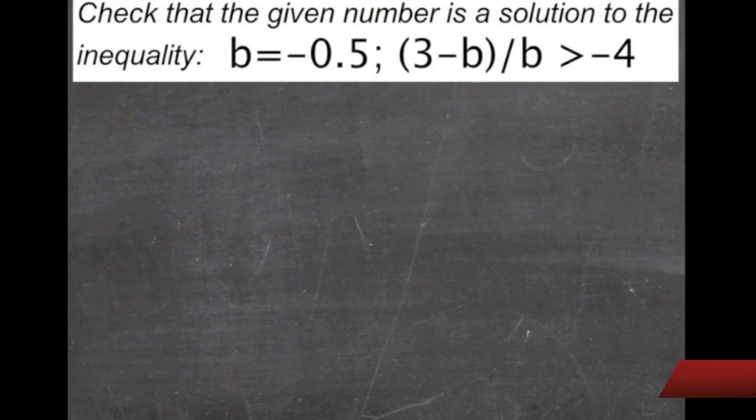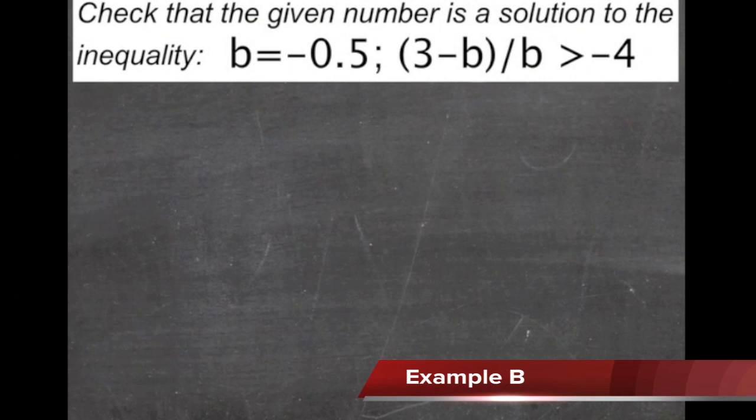Here's another example of checking the answer under the inequality. The information we're given tells us that b is equal to negative 0.5, and that 3 minus b divided by b is greater than negative 4. So we just need to take this information here, plug it in in place of b, and see if we come out with a true statement.